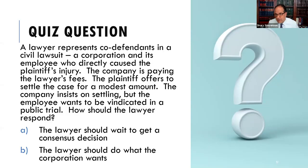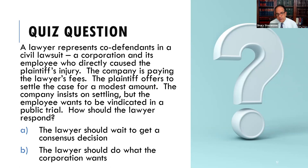Here's our review question: A lawyer represents co-defendants in a civil lawsuit — a corporation and its employee who directly caused the plaintiff's injury. The company is paying the lawyer's fees. The plaintiff offers to settle for a modest amount. The company insists on settling, but the employee wants to be vindicated in a public trial. How should the lawyer respond? A: The lawyer should wait to get a consensus decision. Or B: The lawyer should do what the corporation wants because the corporation is paying the lawyer's fees. Hopefully you know the answer from this lecture.